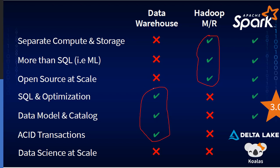SQL happens to be a declarative programming model, so the programmer doesn't need to worry about how query plans are generated internally — just fire the command and get the results. Another very important feature of the SQL world was data modeling and catalog. And definitely ACID transactions were the biggest thing missing in Hadoop MapReduce. ACID has clear advantages in the file system scenario that Hadoop doesn't handle well.